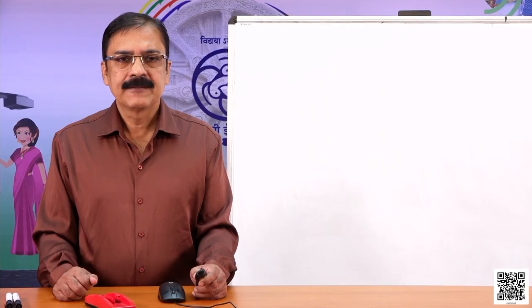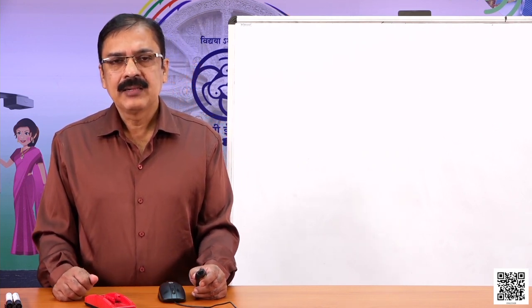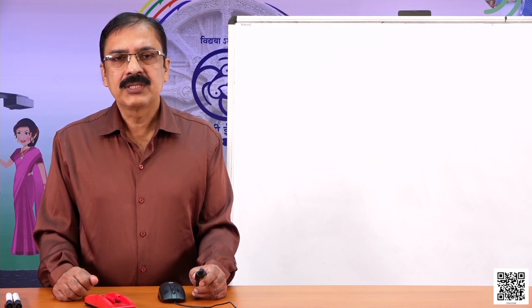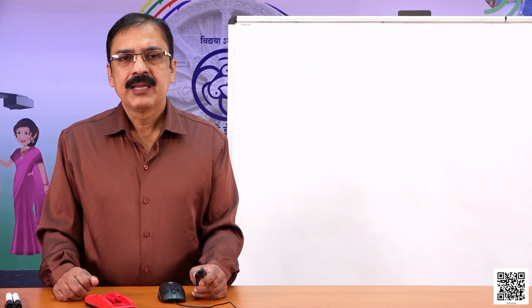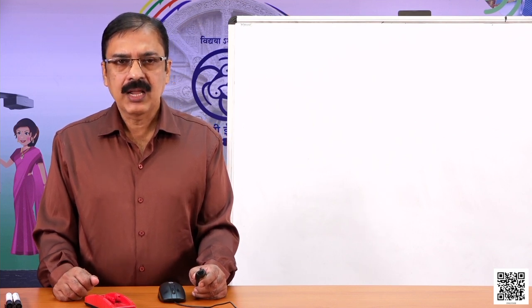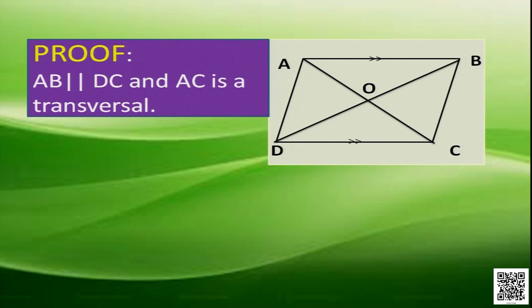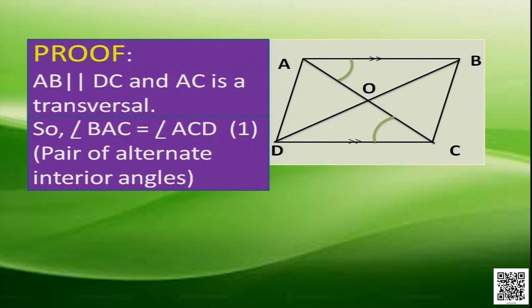How to prove this? In this figure, AB and CD are parallel, as this is a parallelogram — opposite sides are parallel. And AC is a transversal. If we consider these three sets of lines, then we have angles BAC and ACD to be alternate interior angles. In parallel lines, alternate interior angles are equal, so we can write angle BAC is equal to angle ACD.